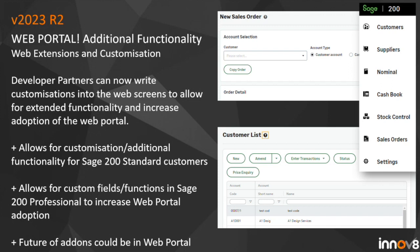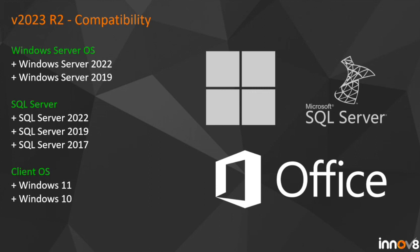I thought it would be a good opportunity to look at the current compatibility matrix for 2023 R2. We can see Windows Server 2022 and Windows Server 2019 are supported, along with SQL Server 2022, 2019, and 2017. For the client we have two versions of Windows — Windows 7 and Windows 8.1 have been dropped, but Windows 11 is now supported, which is more and more commonly coming through.